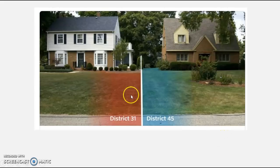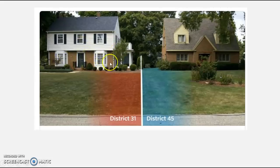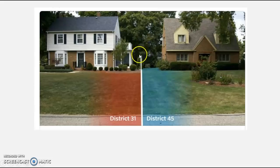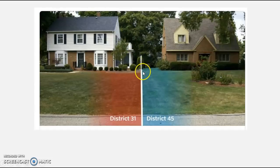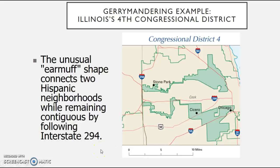Some neighborhoods are gerrymandered to a very precise level. In one actual example — I believe in Wisconsin — a house is represented by District 31, but if you cross into that property line you're now in District 45. Gerrymandering sometimes goes right by individual houses and in some cases is done specifically to create a safe district for the politician, going down to specific house numbers.